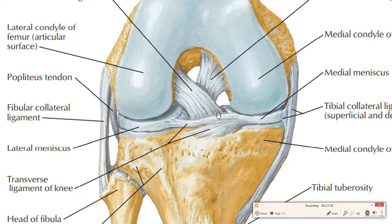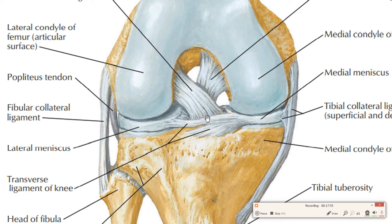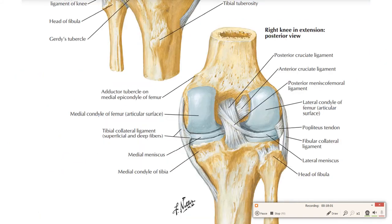The two cruciate ligaments connect the tibia and femur together. They are called 'cruciate' because they cross each other within the joint. These ligaments are intra-articular but outside the joint cavity. Inferiorly, both are attached onto the intercondylar area — the anterior cruciate ligament to the anterior part and the posterior cruciate ligament to the posterior part of the intercondylar area.